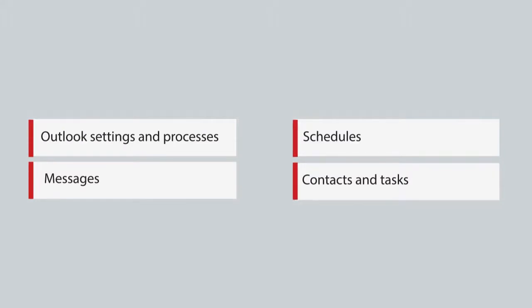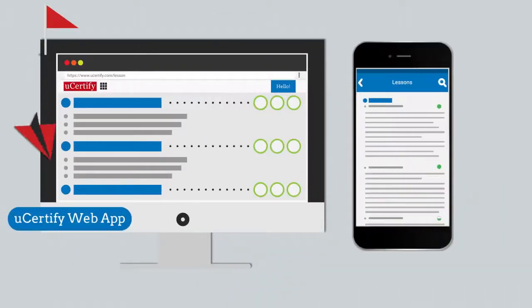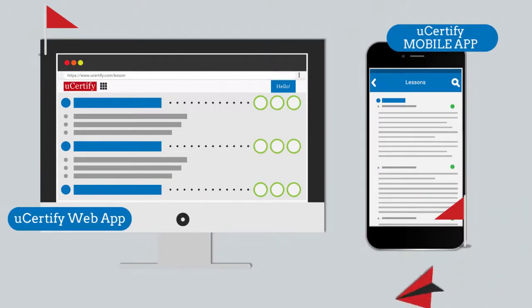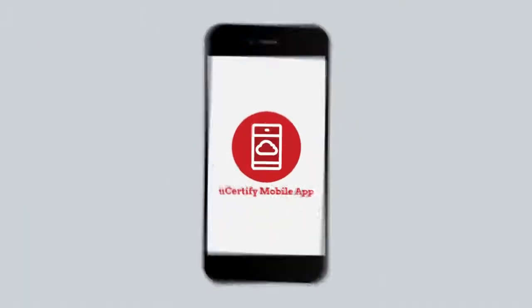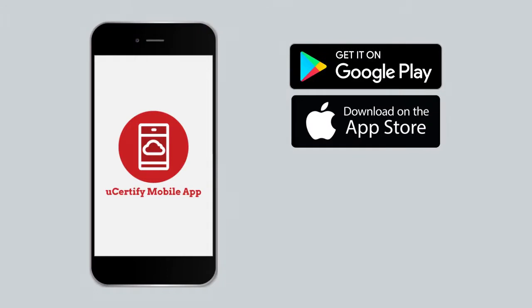Our course is also available on the UCertify mobile app. You can start the course with a web app and end with a mobile app, or vice versa. Students and educators can move from device to browser and get back seamlessly without losing any performance or activity data. You can download our mobile app from the Google Play Store and iOS App Store.